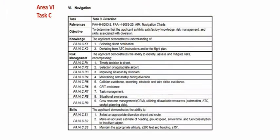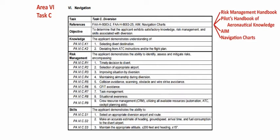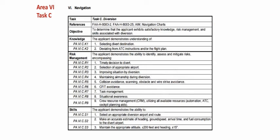Now that we've looked at what an area of operation would look like under the oral portion of your exam, let's talk about what it would look like under the flight portion of the exam. If we look in our ACS under Area of Operation Task 6 for the private pilot and we look at Task C, which is diversion, we can see that we have certain references here. It gives the 8083, which is your handbooks, the Airman's Information Manual, and navigation charts. In order to properly do a diversion, you have to be familiar with those references.